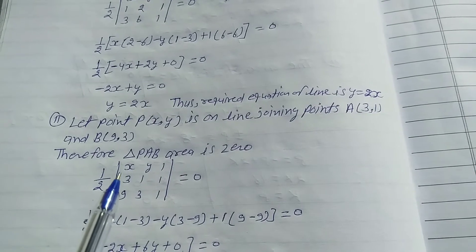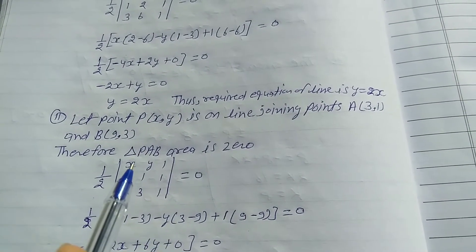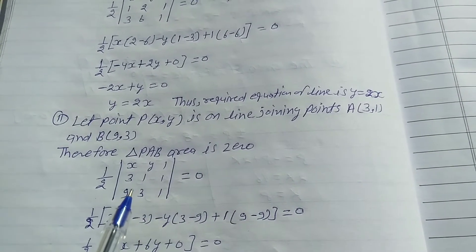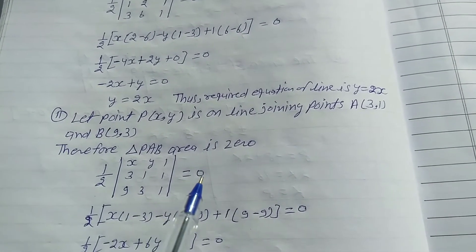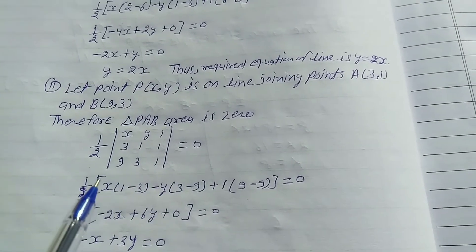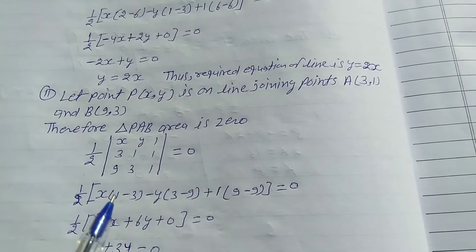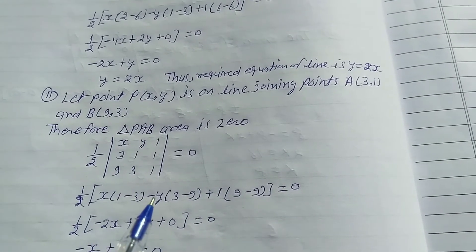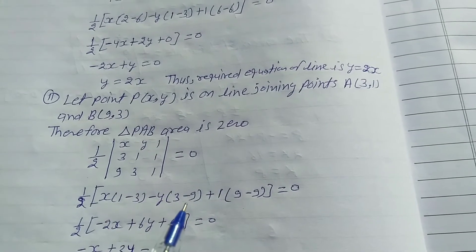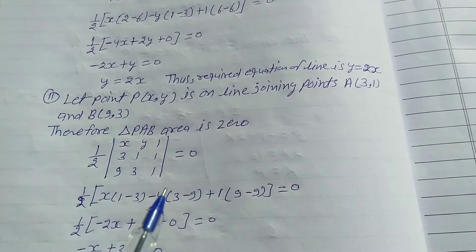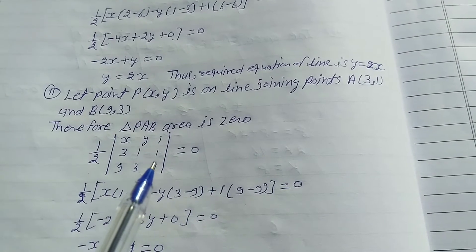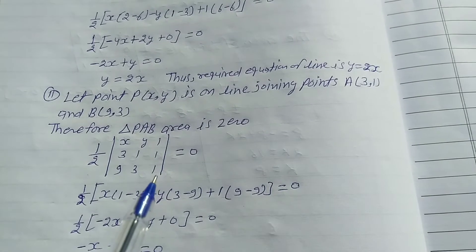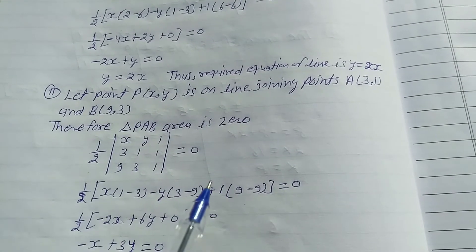So, 1/2 times the determinant of 3 points is used: |x, y, 1; 3, 1, 1; 9, 3, 1| = 0. Expanding: x(1·1 − 3·1) − y(3·1 − 9·1) + 1(3·3 − 9·1), which gives x(1−3) − y(3−9) + (9−9) = 0.